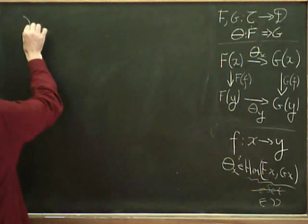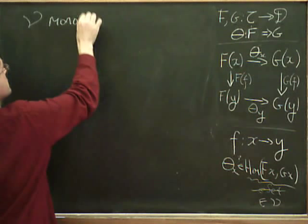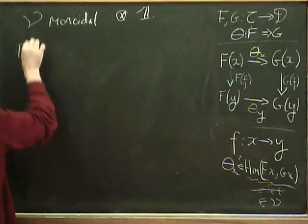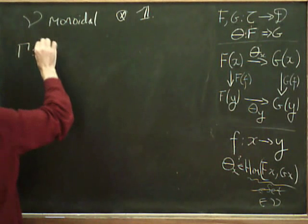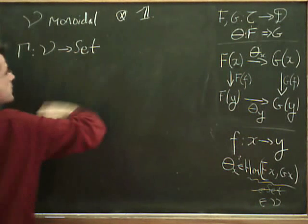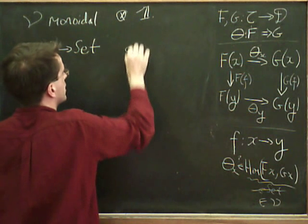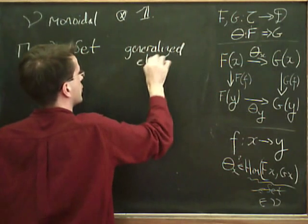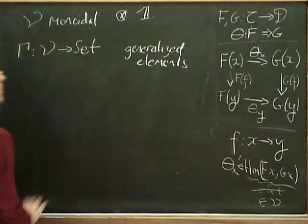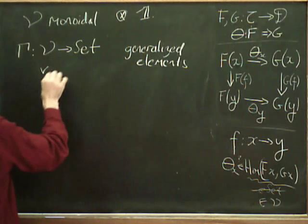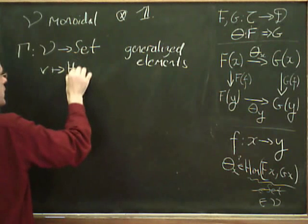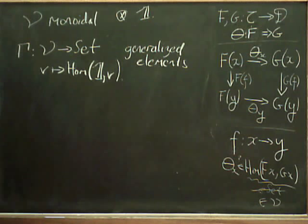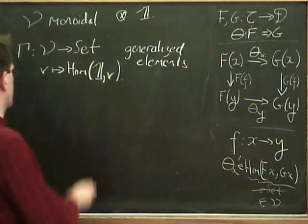So, suppose that V is a monoidal category. So it has a tensor product and a unit object. And we can define a canonical functor from V to the category of sets. And this is sometimes called the generalized elements or just the elements or the global elements. There's various names for this functor. So it takes an object V. And what it does, it just takes this to the hom set from the unit object into the element V.